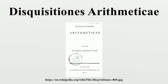The Disquisitiones Arithmeticae is a textbook of number theory written in Latin by Karl Friedrich Gauss in 1798 when Gauss was 21 and first published in 1801 when he was 24. In this book Gauss brings together results in number theory obtained by mathematicians such as Fermat, Euler, Lagrange, and Legendre, and adds important new results of his own. The Disquisitiones covers both elementary number theory and parts of the area of mathematics now called algebraic number theory. However, Gauss did not explicitly recognize the concept of a group, which is central to modern algebra, so he did not use this term. His own title for his subject was Higher Arithmetic.